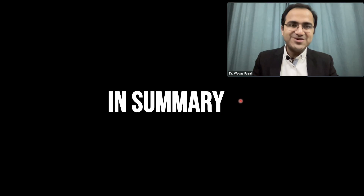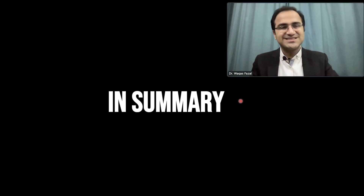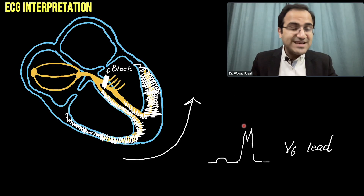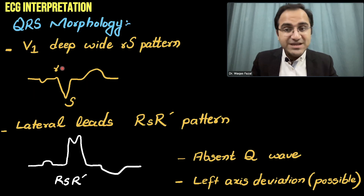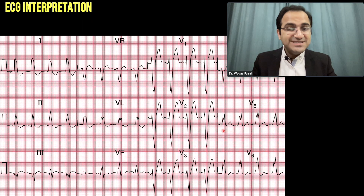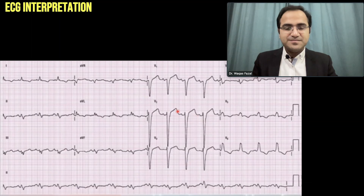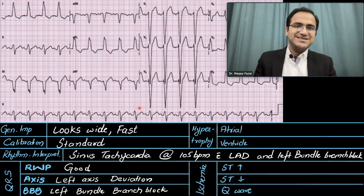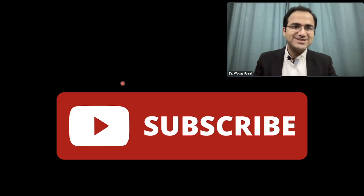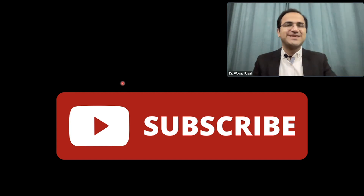If you liked the video please click the subscribe button and check out the other videos on ECG interpretation made easy. In this video we talked about how the M wave appears in V6, the deep S wave in V1, absent Q waves, and left axis deviation in left bundle branch block. We solved some ECGs demonstrating these findings. Links to the right bundle branch block video and other related videos are given in the description below. Thank you very much.